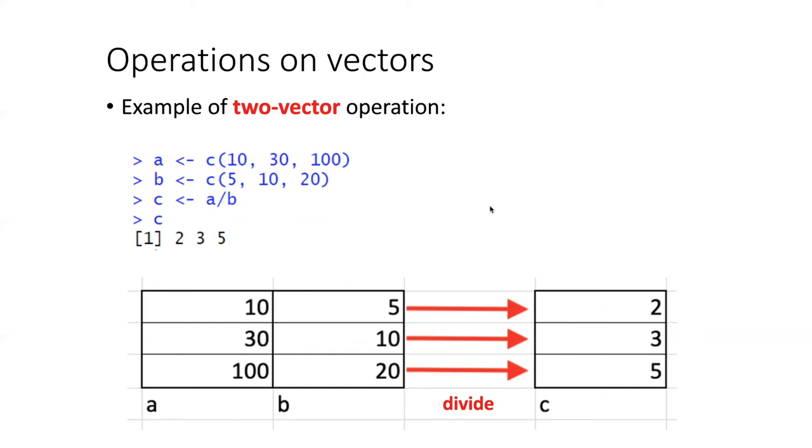One of the questions then is what happens if the length of the vectors are not the same, and R has rules for dealing with this. It will essentially repeat the items in the shorter vector until it's repeated it enough times to match up with the longer vector. But basically if you're doing this kind of operation, it's best to try to ensure that the vectors you're performing the operation on actually have the same number of items. Otherwise you end up getting perhaps some kind of unanticipated results that surprise you.